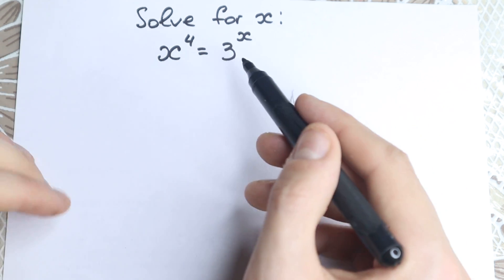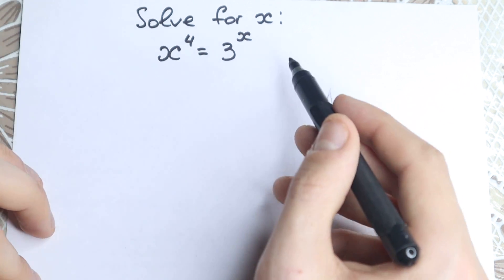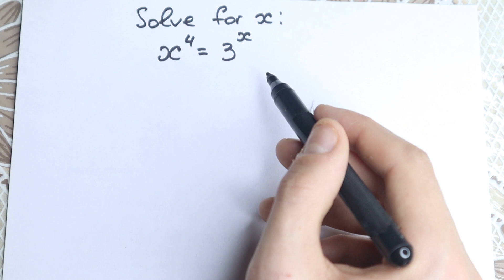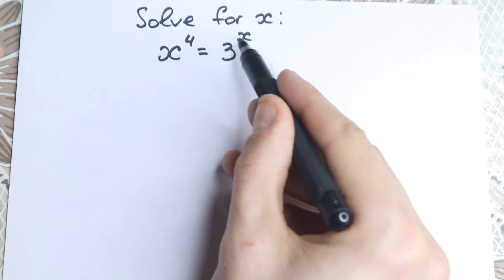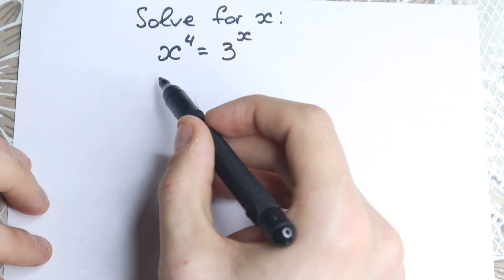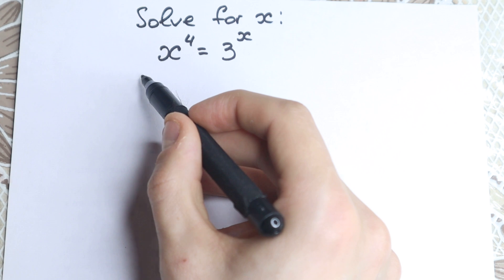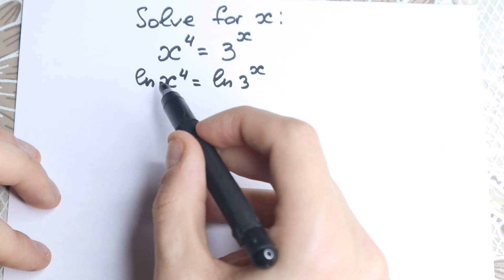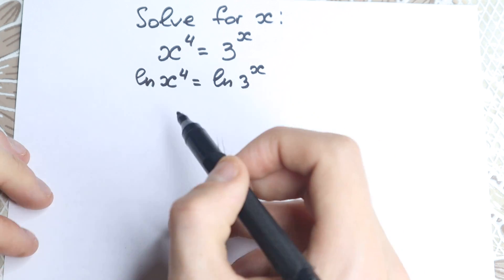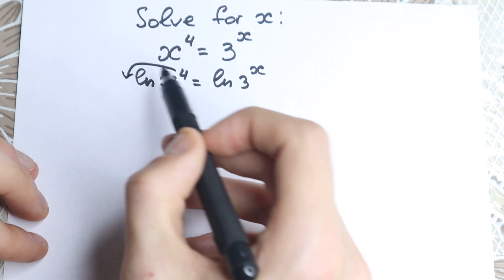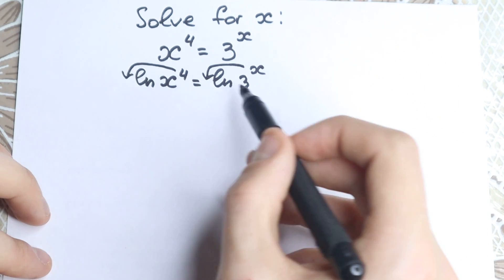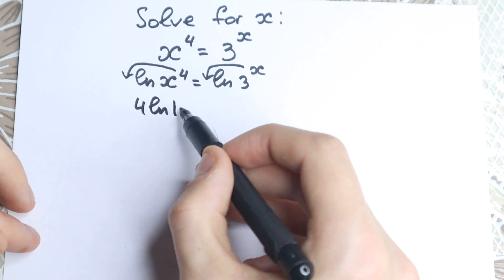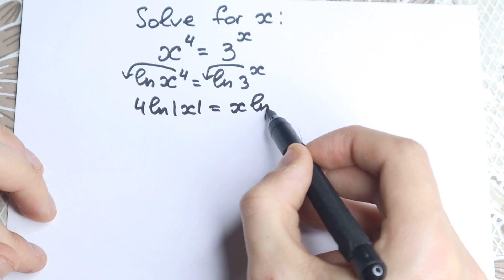But how can we solve it? Let's try to simplify it step by step. We don't want x as a power or as an exponent, so let's apply the natural log. If you know a little bit about natural log, we can write natural log of x to the fourth equal to natural log of 3 to the x. We apply natural log on both sides, and we bring down the exponents: 4 times natural log of the absolute value of x equals x times natural log 3. Note that x can be positive or negative, so we use the absolute value.